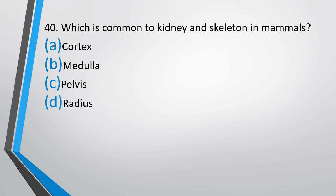Question number 40: Which term is common to kidney and skeleton in mammals? Cortex, medulla, pelvis, or radius? The correct answer is option C — pelvis is common to both. If you cut through a section of the kidney, the medullary pyramids together form the renal pelvis. In the skeleton of mammals, when the two hip bones join, they form the pelvic girdle — the pelvis bone. So pelvis is a term common to both the kidney and the skeleton.